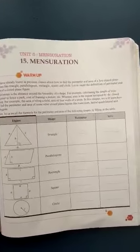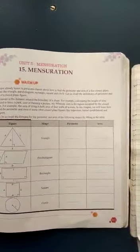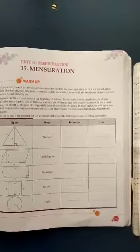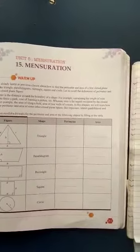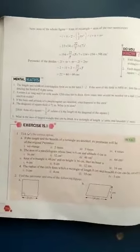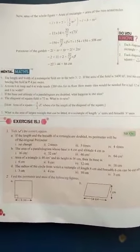So students, now in this chapter we will learn how to find the perimeter and area of some other closed figures like trapezium, quadrilateral and polygons. So students, very first, we are starting our first exercise, exercise 15.1. We will start from question number 2.